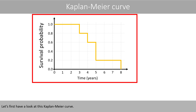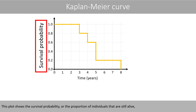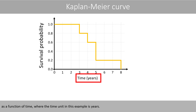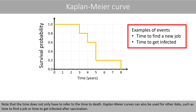Let's first have a look at the Kaplan-Meier curve. This plot shows the survival probability, or the proportion of individuals that are still alive, as a function of time, where the time unit in this example is years. Note that the time does not only have to refer to the time to death — Kaplan-Meier curves can also be used for other data, such as time to find a job, or time to get infected after vaccination.